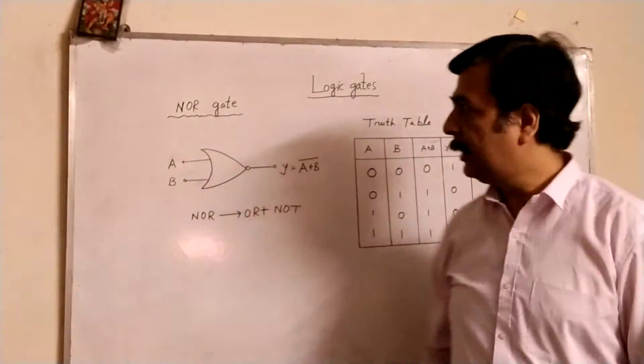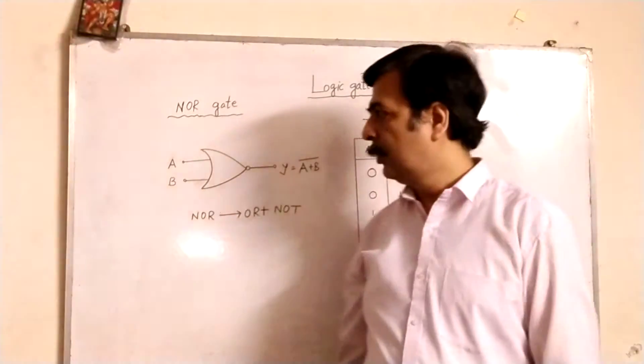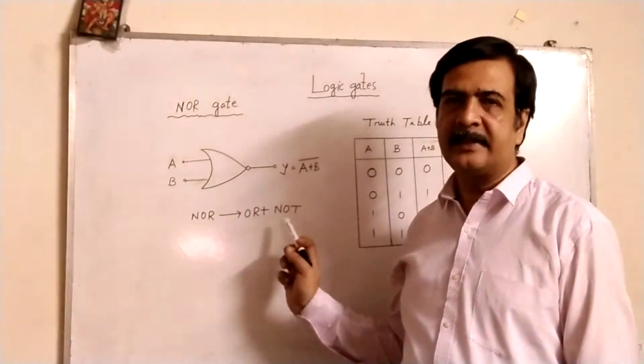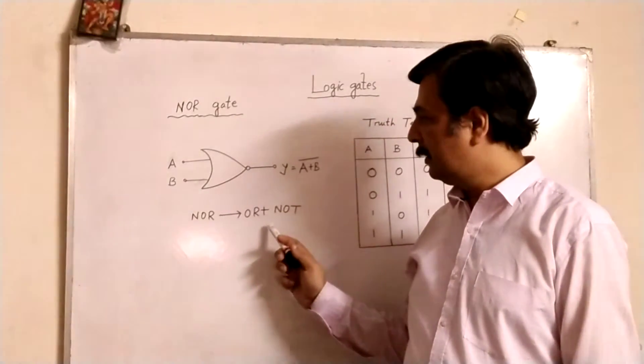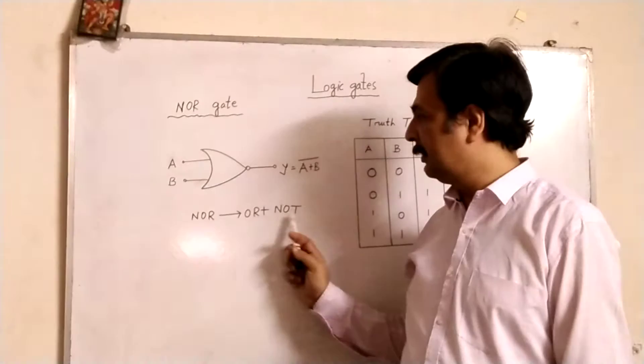Hello students. Today I will discuss about NOR gate. NOR means OR plus NOT. Two operations will be done consecutively. First OR then NOT.